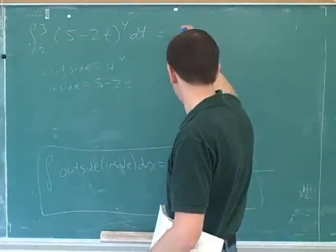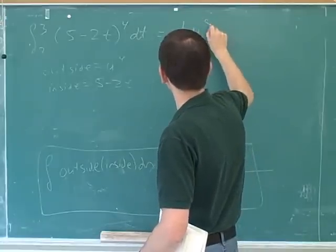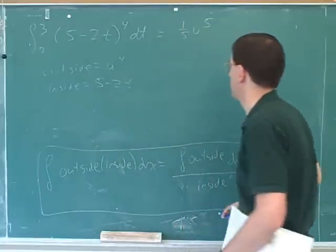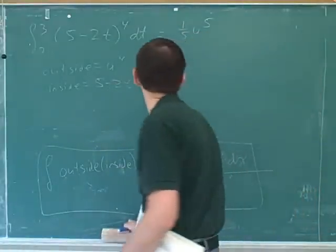So the anti-derivative of the outside here is going to be one-fifth u to the fifth. This is when we increase the exponents. And what should I plug in for u? I should plug in the inside function, which is 5 minus 2t.